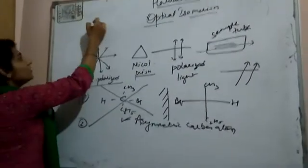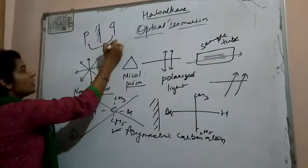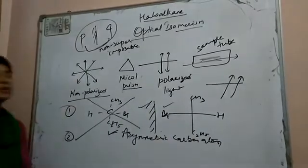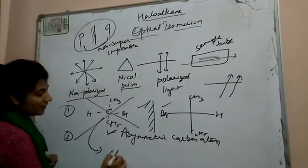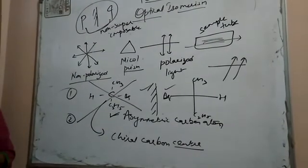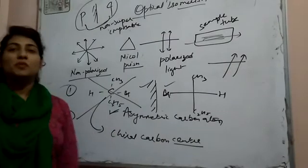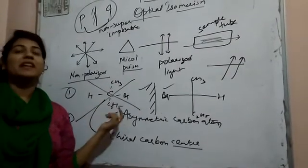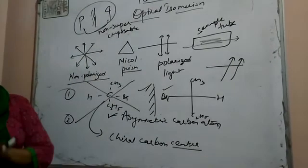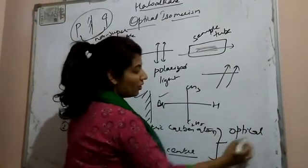If we use an example like the letter P and make its mirror image, placing them on top of each other shows they are non-superimposable. So if we have a pair that is non-superimposable, then that carbon is called a chiral carbon center, and this type of phenomenon is known as chirality. So a compound is optically active when: first, the carbon is an asymmetric carbon atom — meaning all 4 valencies are satisfied by different atoms and groups of atoms; and second, the mirror image should be non-superimposable. If both conditions are satisfied, then the compound will be optically active.